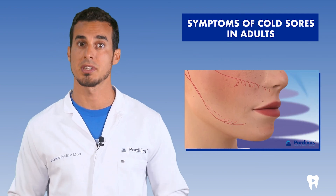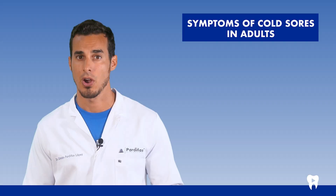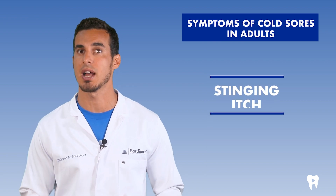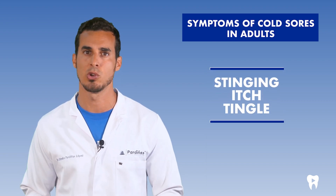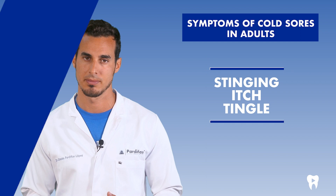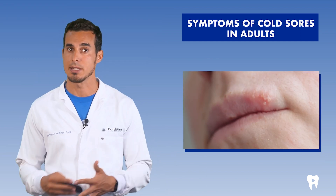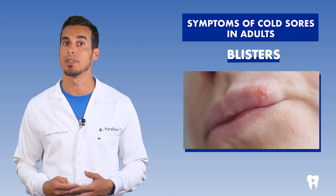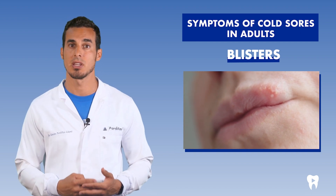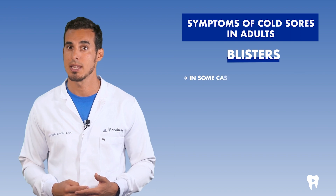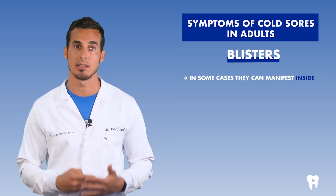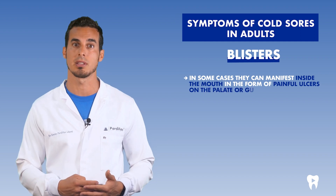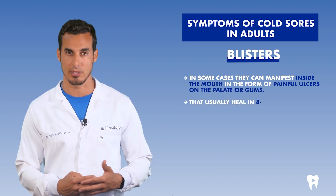These outbreaks are usually related with these symptoms. Herpes infection begins with itching and a tingling sensation very localized on the edge of the lips. After a couple of days, small yellowish blisters appear that usually develop along the lips or in nearby areas, such as the cheeks and nose. In some cases, they can manifest inside the mouth as painful ulcers in the palate or gums that usually heal in 8 to 10 days.